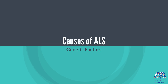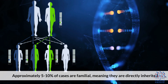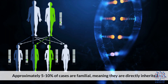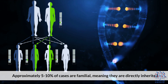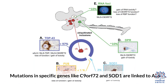Causes of ALS — Genetic Factors: Approximately 5–10% of cases are familial, meaning they are directly inherited. Mutations in specific genes like C9ORF72 or SOD1 are linked to ALS.